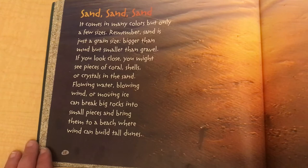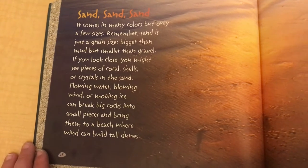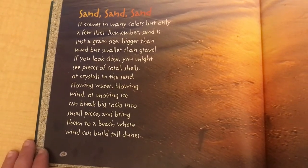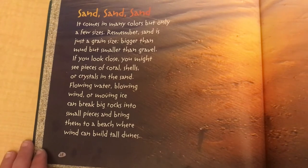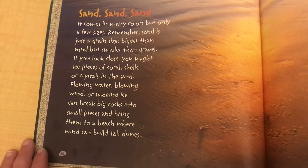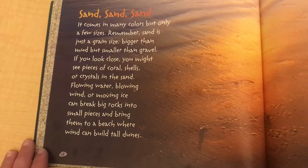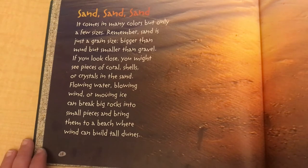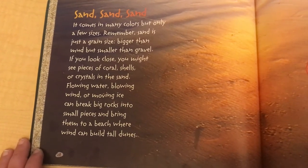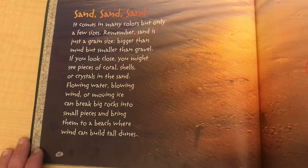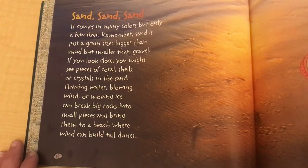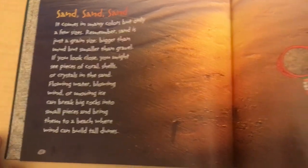Sand, sand, sand — it comes in many colors but only a few sizes. Remember, sand is just a grain size, bigger than mud but smaller than gravel. If you look close, you might see pieces of coral, shells, or crystals in the sand. Flowing water, blowing wind, or moving ice can break big rocks into small pieces and bring them to a beach where wind can build tall dunes.